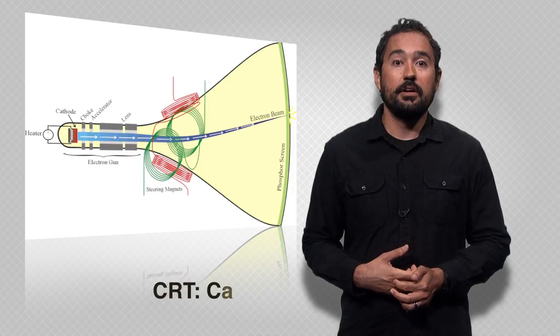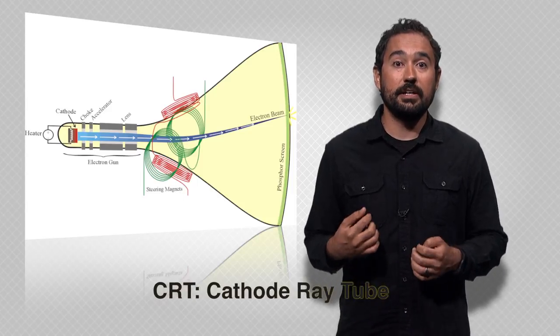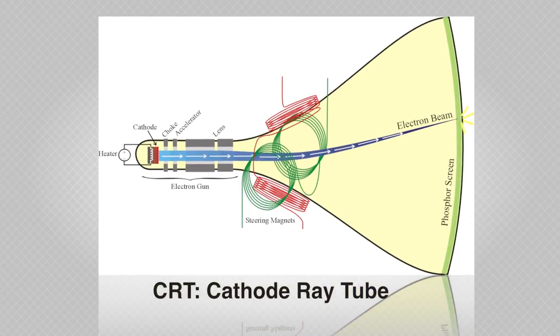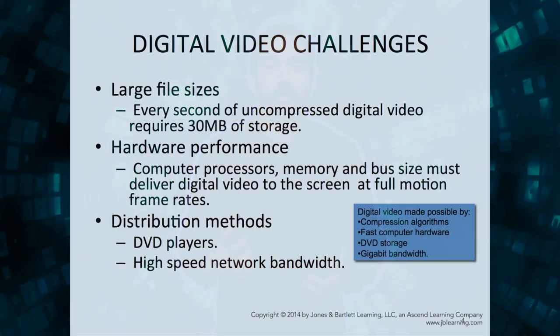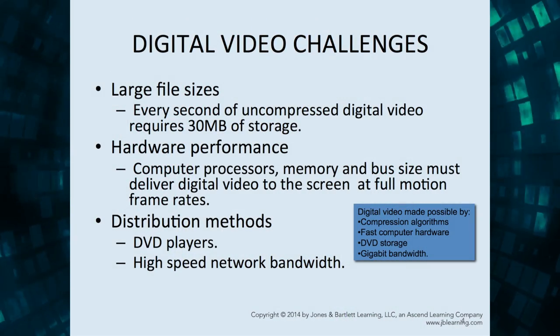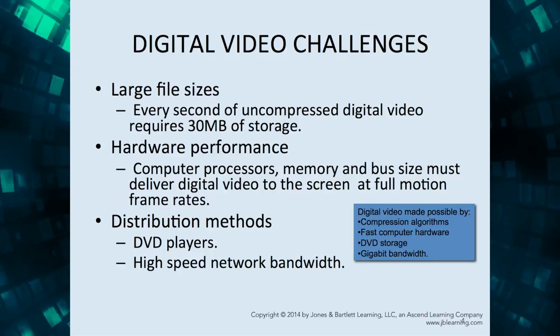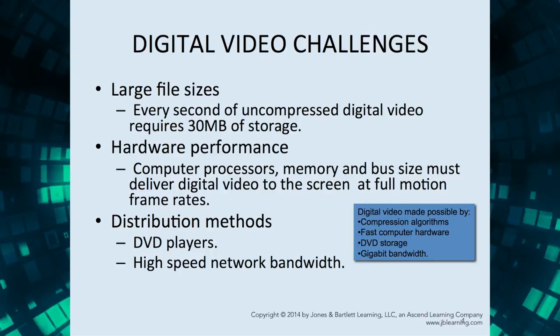Here is an example of how a CRT displays moving images. Digital video uses binary code to produce videos and play them back. Because of the amount of still pictures needed at a high resolution, digital video does have some challenges with file size and processing. For example, your textbook states that 30MB of data is needed for every second of uncompressed digital video.